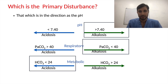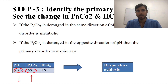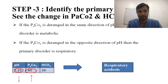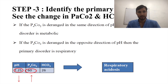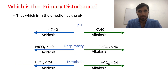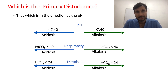Step 3 is identifying the primary disorder. We look at changes in PCO2, pH, and bicarbonate. If PCO2 is deranged in the same direction as pH, the primary acid disorder is metabolic; if PCO2 is deranged in the opposite direction, the primary disorder is respiratory. For example, pH 7.25 with PCO2 60 and bicarbonate 26 indicates respiratory acidosis. If pH < 7.4, PCO2 > 40, and bicarbonate < 24, it is acidosis.